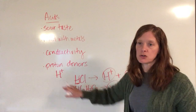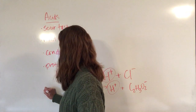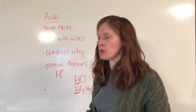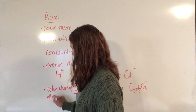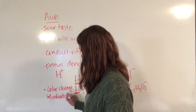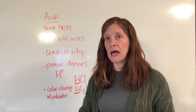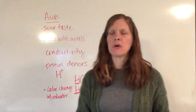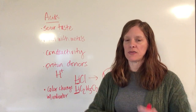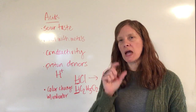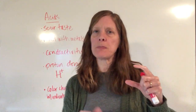The last characteristic of acids is that there is a color change with indicators, so you can tell whether something is an acid or a base. There are many different kinds of indicators and we'll explore those further in the chapter. One common method is soaking paper in an indicator — this is called litmus paper, and it comes as red litmus paper and blue litmus paper.